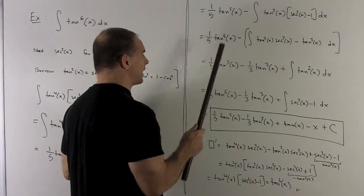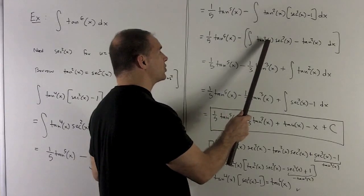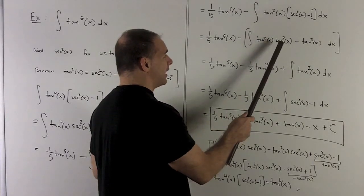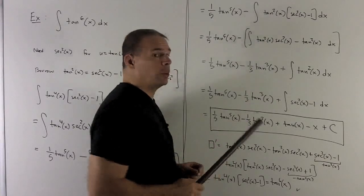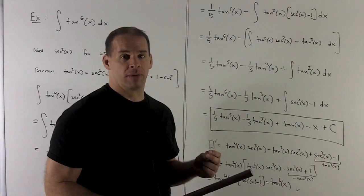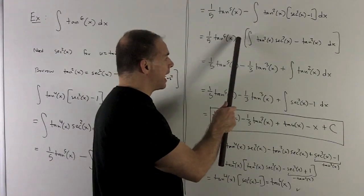Let's see what happens. 1/5 tan to the 5th of x, we just carry along. Here, u is equal to tangent x, so it's going to be a u squared. And then du is just secant squared dx, so I'm looking at u squared du. We add 1, flip it over, I get 1/3 tan cubed. We're going to pick up a minus sign, though.